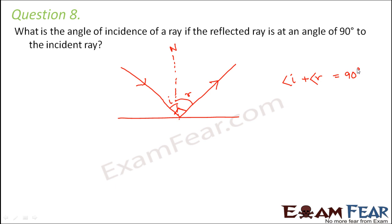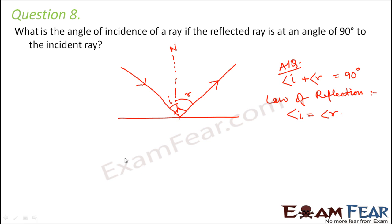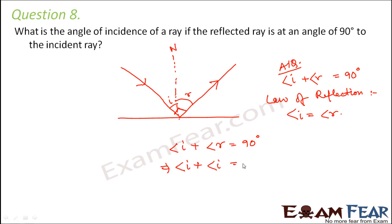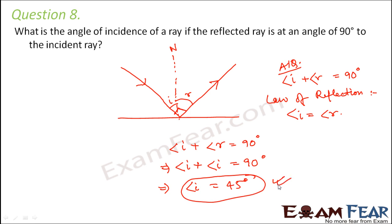As per the question, angle I plus angle R equals 90 degrees. As per the law of reflection, angle I equals angle R. Using both of these, angle I plus angle I equals 90 degrees, therefore angle I equals 45 degrees. So the angle of incidence is 45 degrees.